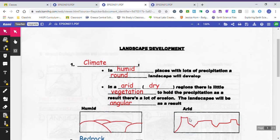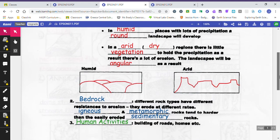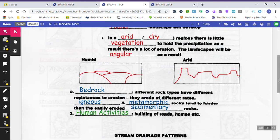The next factor that would have an effect on what landscape is the result is what kind of rock is it. We're talking about the bedrock. What kind of rock makes up an area? There are three different types of rocks: igneous, metamorphic, and sedimentary. Sedimentary rocks tend to erode very easily, whereas igneous and metamorphic are harder rocks so they don't erode as quickly.